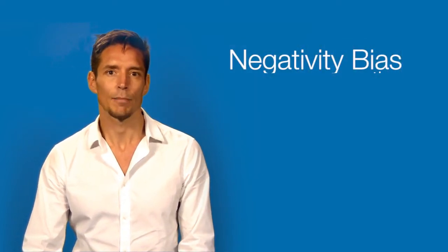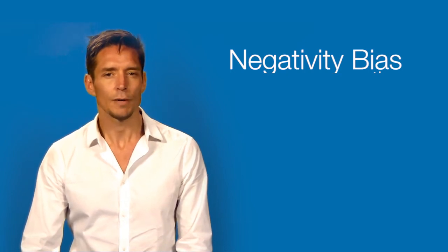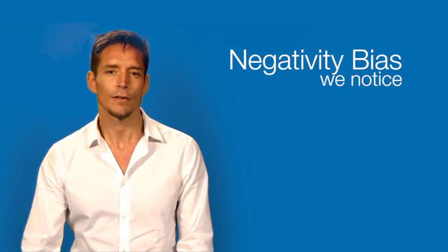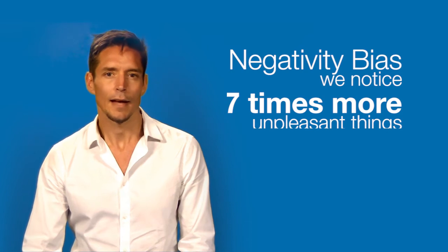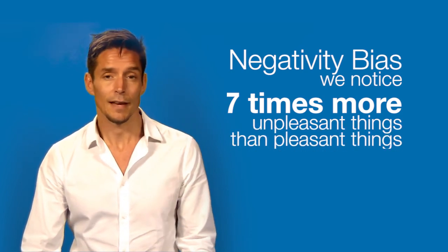Plus, you might have noticed that where your attention tends to go can often be quite unuseful or even unpleasant because we're very prone to worrying about the future, dwelling on the past. We have a negativity bias in our brain, which means that on average we notice and remember about seven times as many unpleasant things as pleasant things, which makes sense evolutionarily.